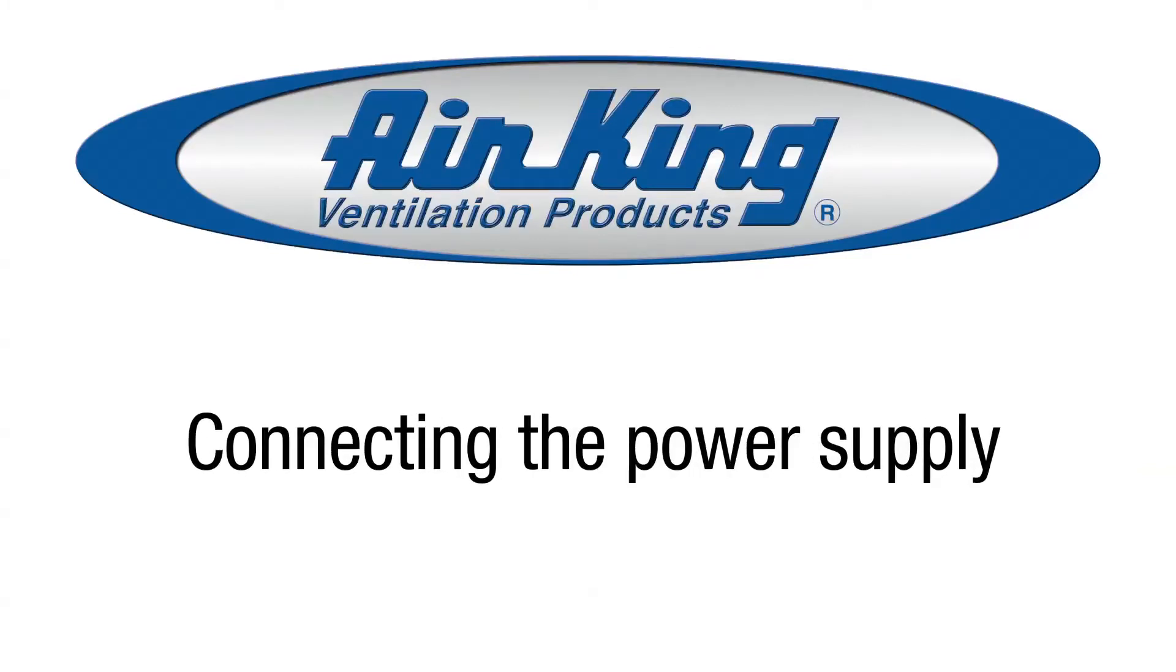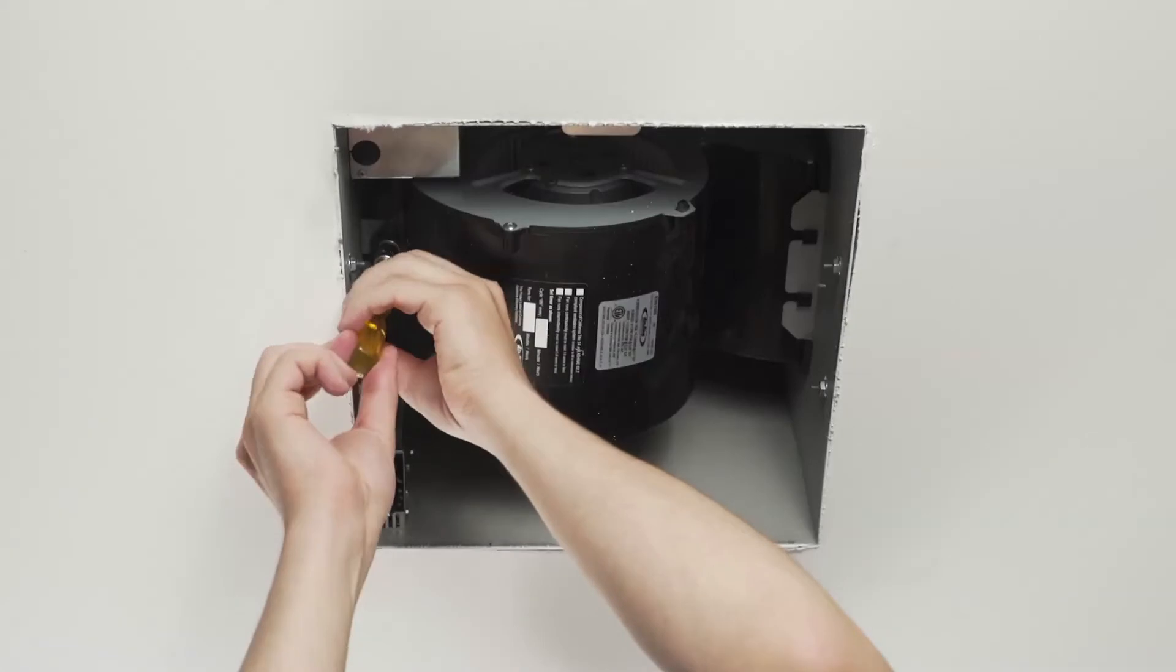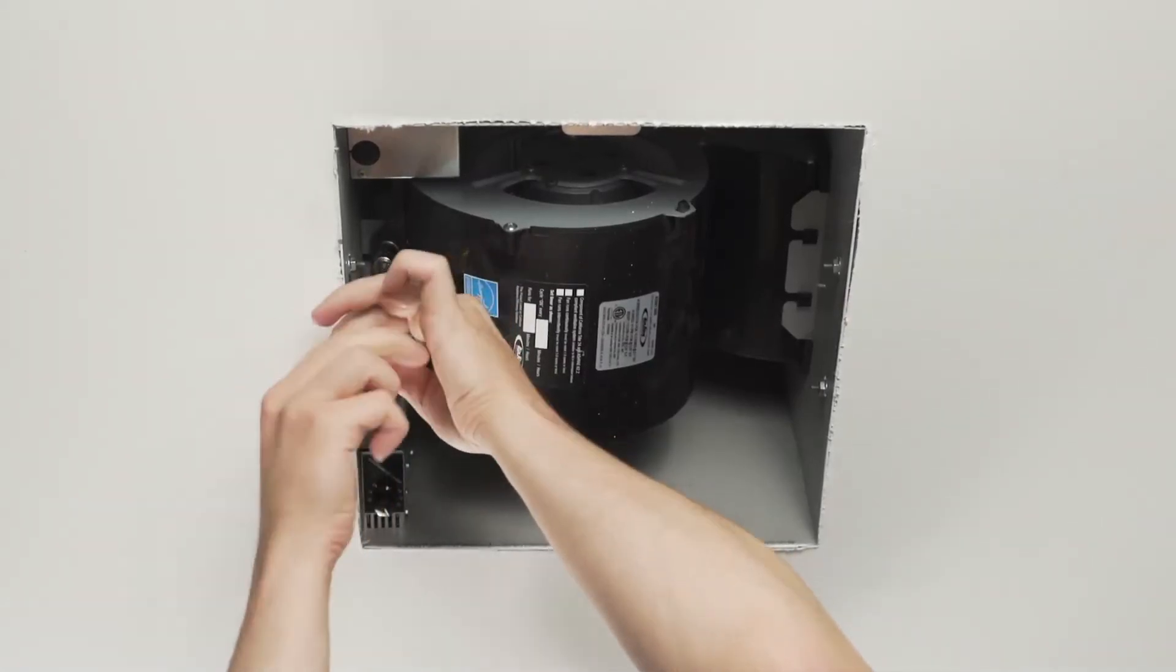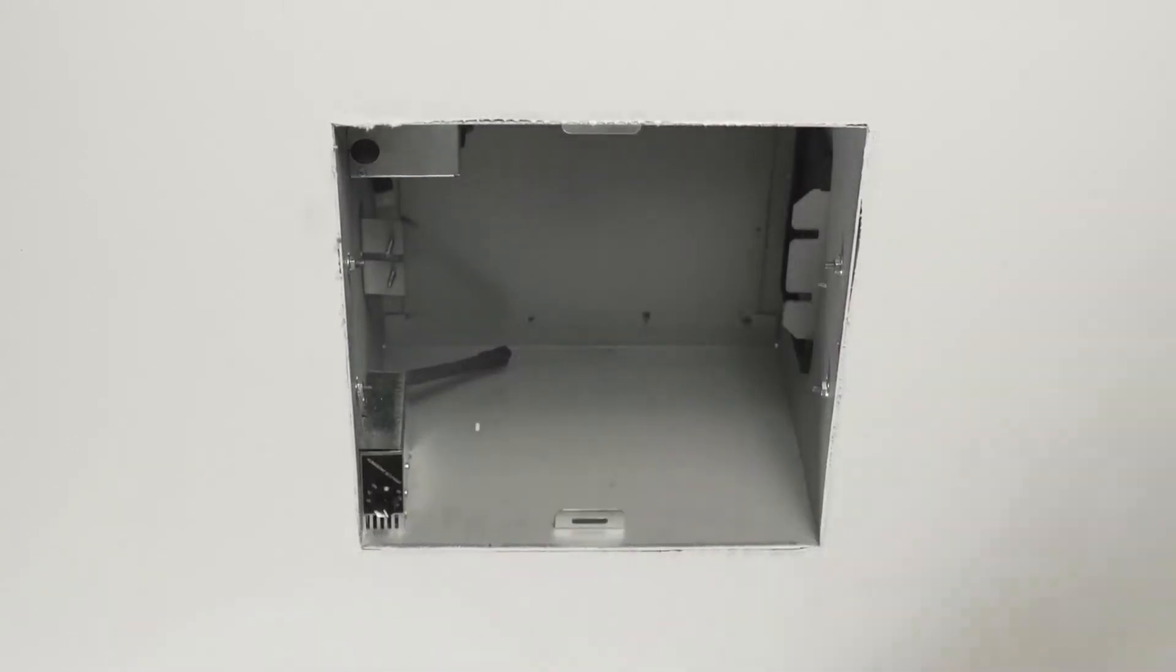Next, connect the power supply to the unit. Remove the blower from the housing by unscrewing the two screws holding the blower in place. Lift up on the blower and slide it out of the tabs on the housing.